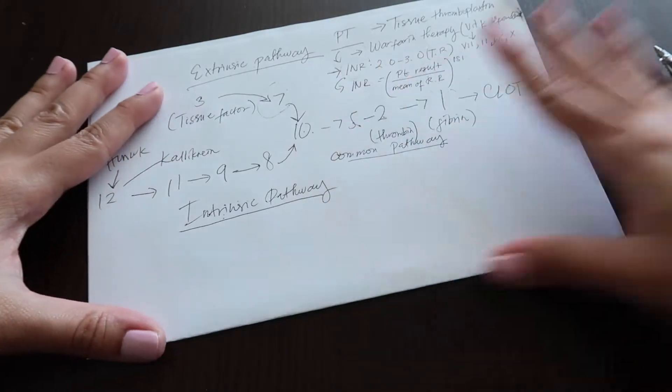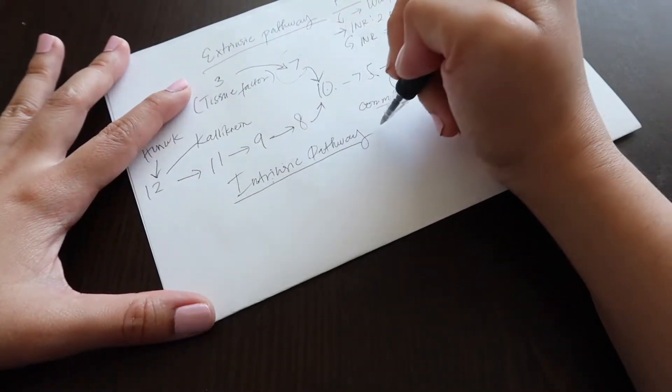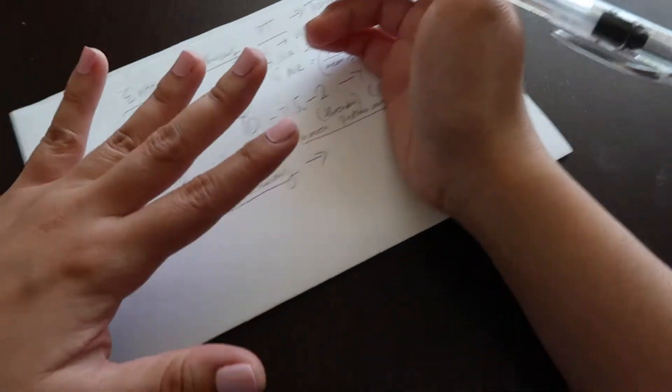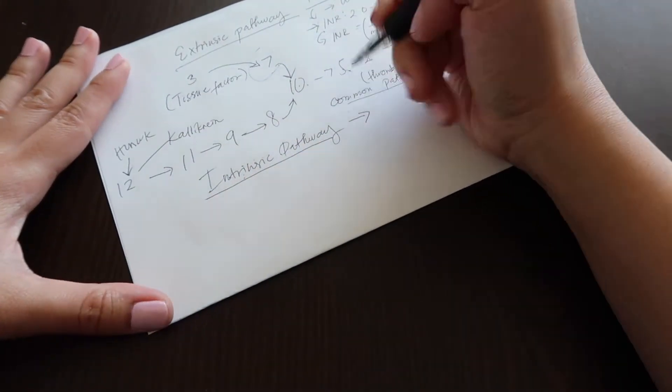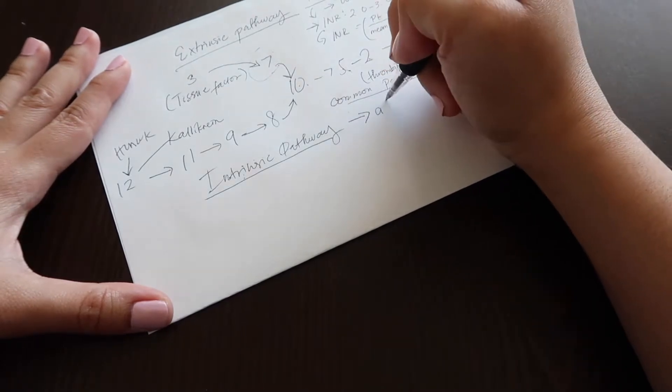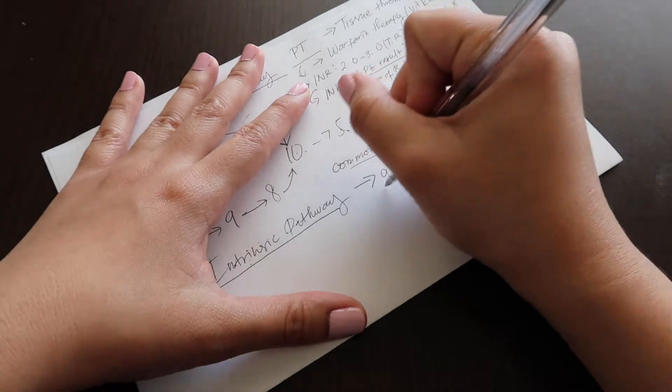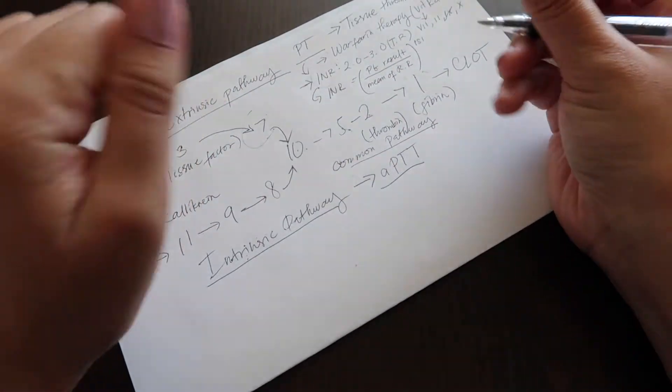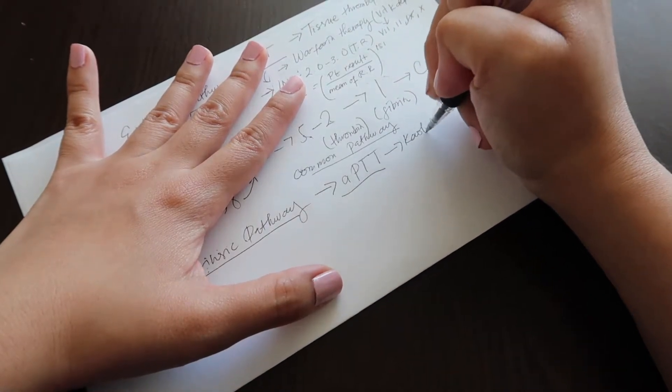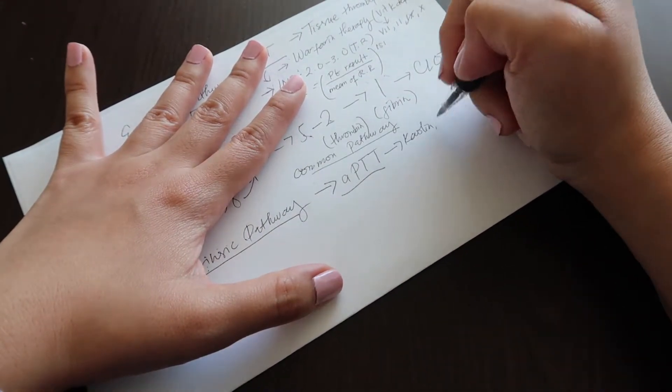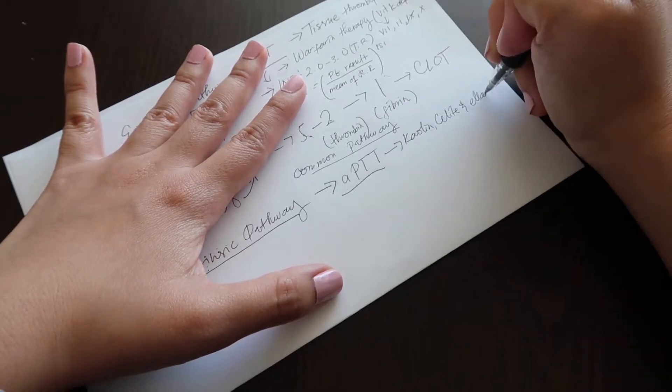And now we move on to the intrinsic pathway. The test used to identify if there is something wrong with your intrinsic pathway is the activated partial thromboplastin time. So let's start. What is it? It's a test that has kaolin, celite, and ellagic acid in its reagents.